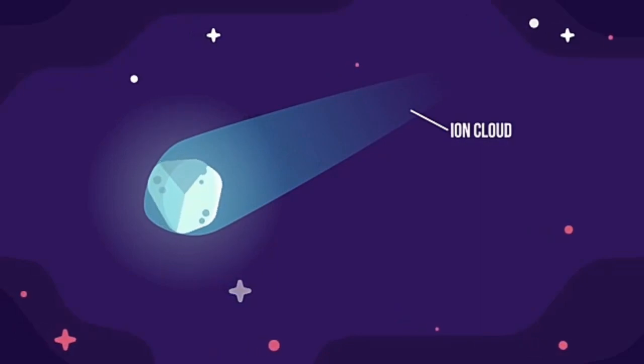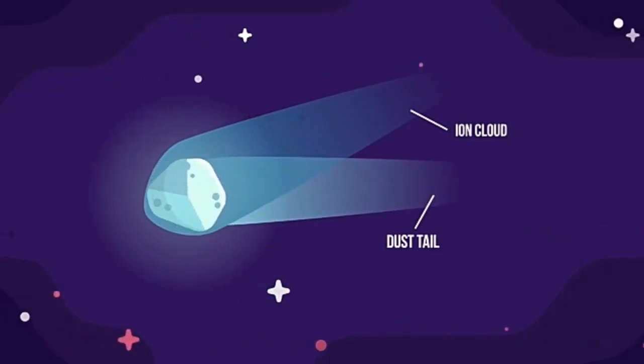Two tails form as well, the ion tail and the dust tail. The dust tail is made from the dust forming around the nucleus. It is being pushed by solar radiation from the Sun, following the orbit of the comet. The ion tail is generally blue, made of ionized gas and points directly away from the solar winds coming from the Sun.